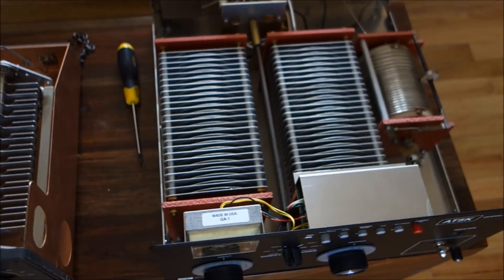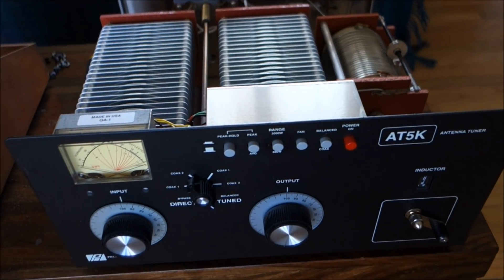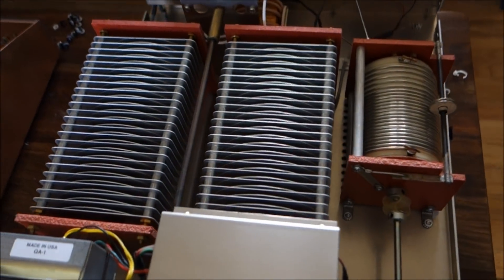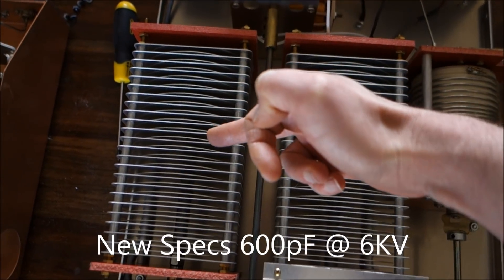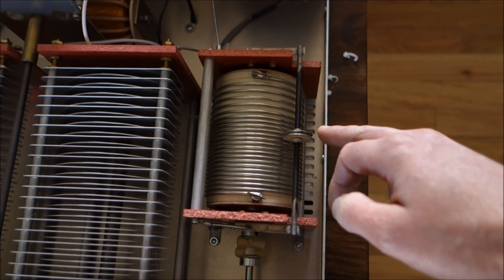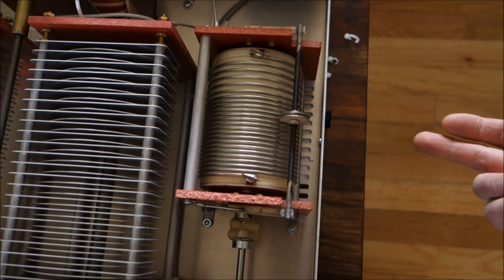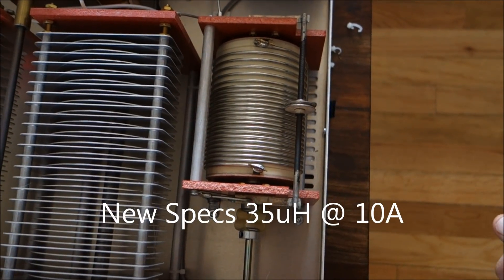And if we look at the PALSTAR AT5K, the PALSTAR AT5K consists of 500 picofarad 5 kVA air variables and along with a roller inductor. I believe it's 26 micro henry 11 amp.